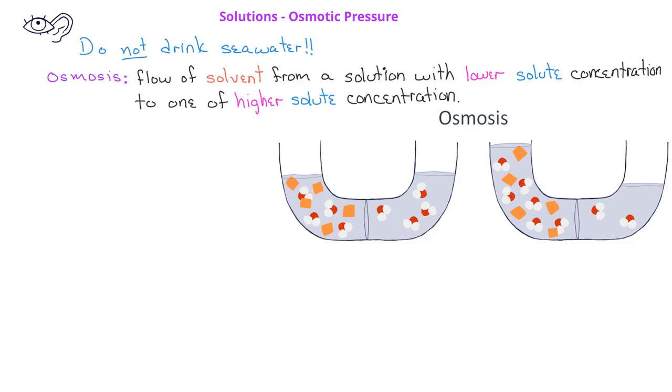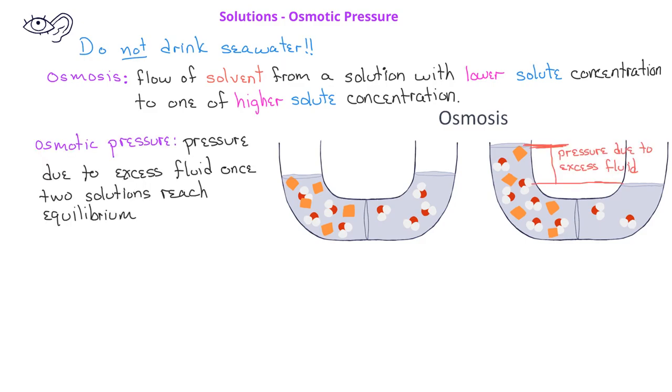The pressure due to this excess fluid on the more concentrated side is known as the osmotic pressure of the solution. Osmotic pressure can be calculated with the equation π equals mRT, where π represents the osmotic pressure in units of atmospheres, m is the concentration of the solute in molarity, r is the ideal gas constant with units of liters times atmosphere over kelvin times mol.